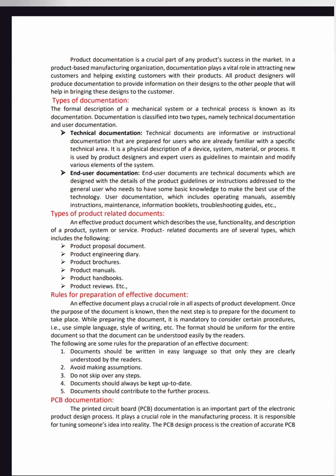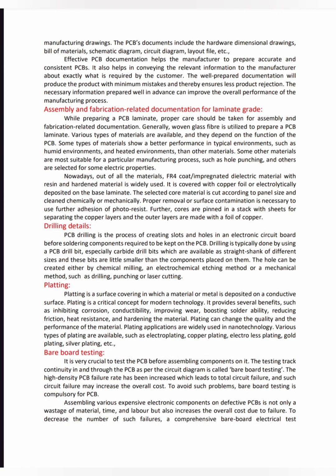PCB Documentation is an important thing. For electronic products, documentation plays an important role — turning an idea into reality. PCB documentation includes Hardware Dimensional Drawings, Bill of Materials, Circuit Diagrams, Layout, Component Placement File, Artwork, Fabrication Drawings, Assembly Drawings, and Instructions.